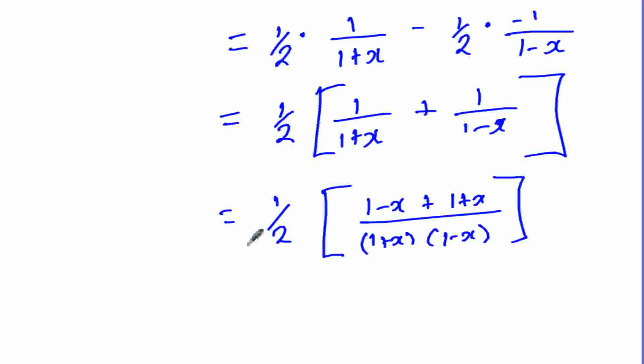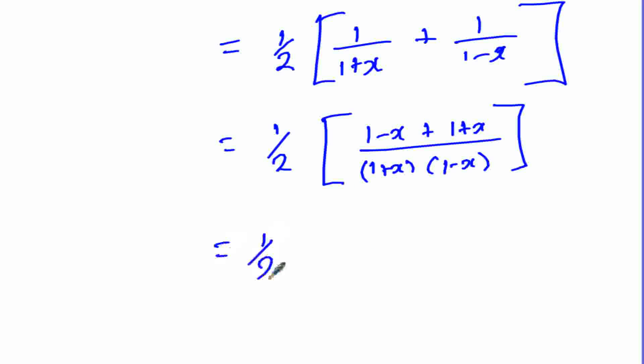So we are getting one-half into, the x will cancel in the numerator and remain with only 2 over, this is a difference of two squares we shall write as 1 minus x squared.